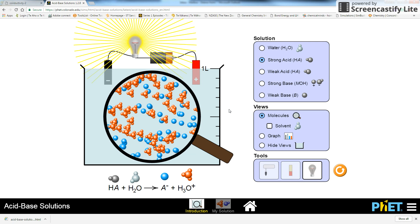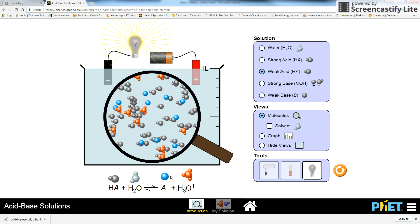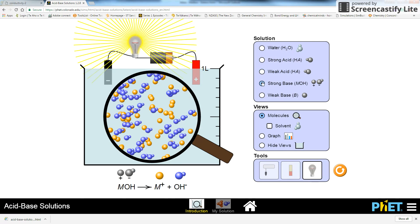Note that the more ions present in solution, the more brightly the light bulb glows. So if I go from strong acid to weak acid, you can see there are fewer blue and orange ions, and so it is not glowing so brightly. Strong base, there are lots of ions, so it's glowing brightly.